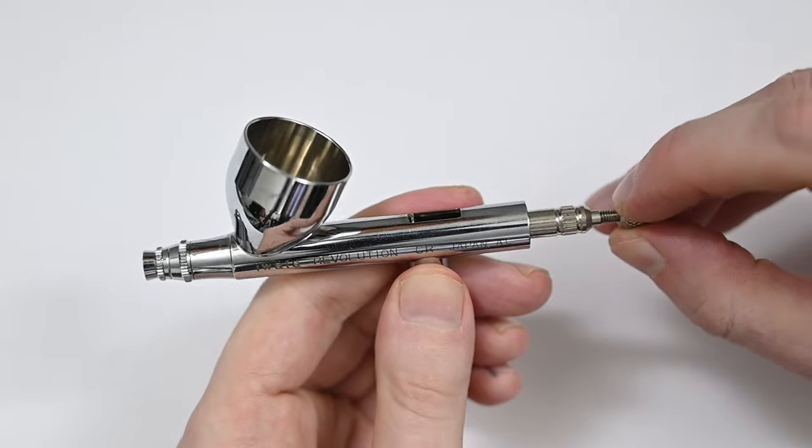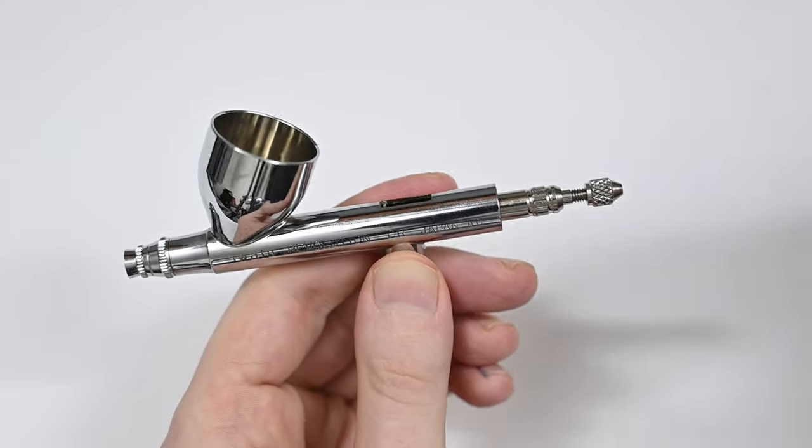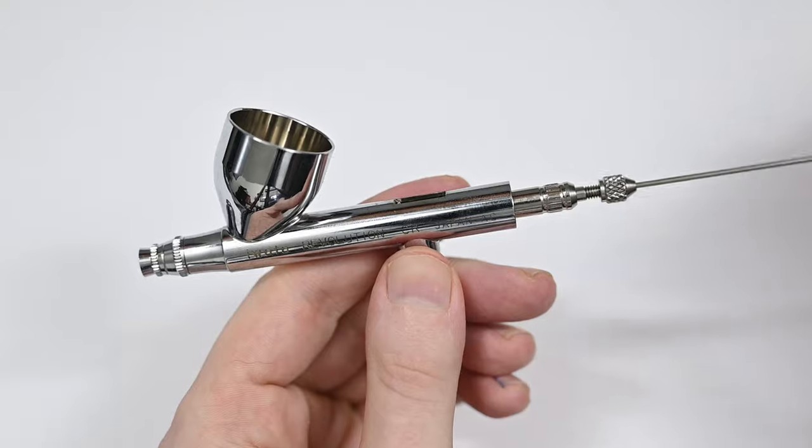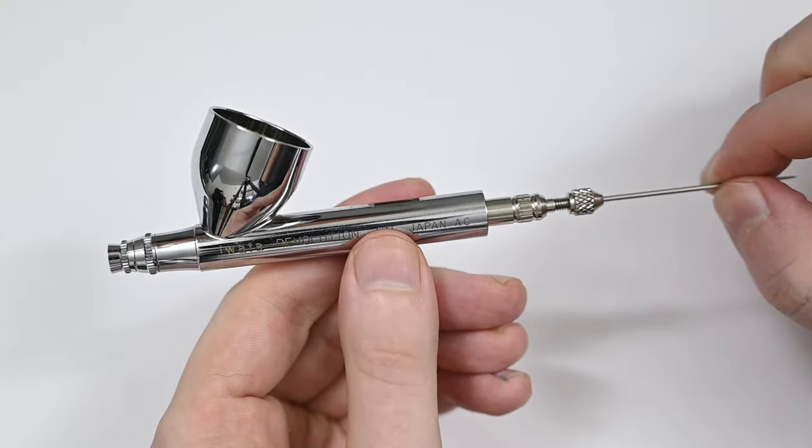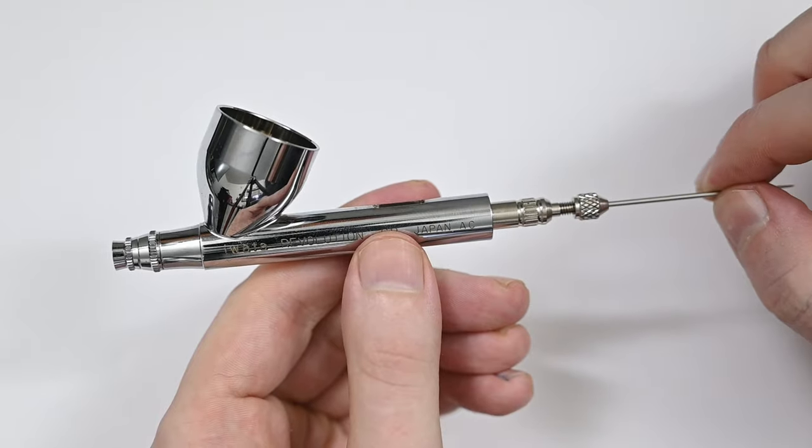And I want to point out here that you're not really adjusting this screw for feel like you would with the trigger spring tension. It's either creating a seal or it's not. And as long as you feel a small amount of tension, like I'm showing right here, you're set.